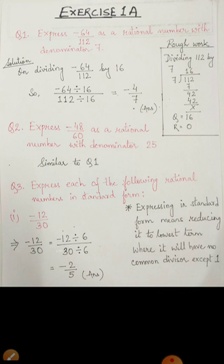First question: express minus 64 upon 112 as a rational number with denominator 7. So, on dividing 112 by 7, we get the quotient 16. Now, if we divide the rational number, that is minus 64 by 16 and 112 by 16, we get the answer as minus 4 by 7.